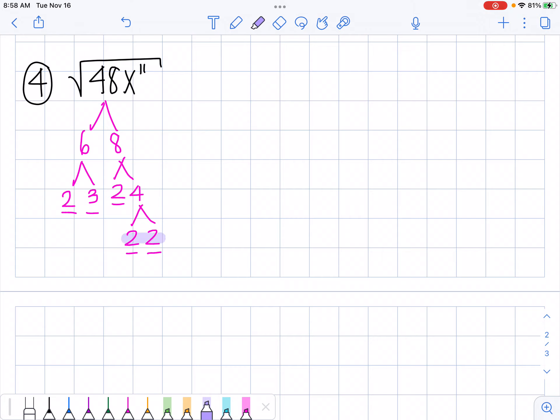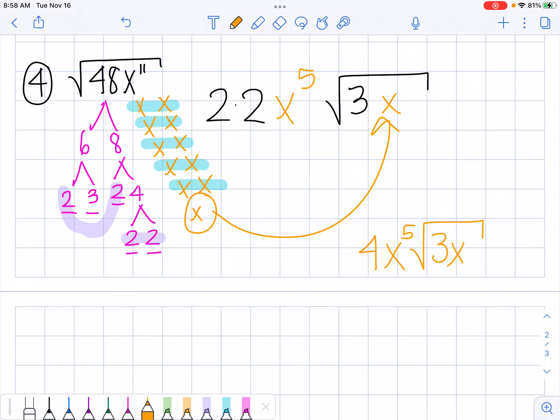So I have 1 pair of 2's, 2 pairs of 2's, and a 3 left over. So I have 2 two's outside, a 3 left over on the inside, and I have 11 X's. So 1, 2, 3, 4, 5, 6, 7, 8, 9, 10, 11. So I have 1, 2, 3, 4, 5 pairs. So this would be X to the 5th, and this lonely guy right here goes back in here underneath the square root. So my final answer, I multiply the 2 times 2, 4X to the 5th times the square root of 3X. Final answer.